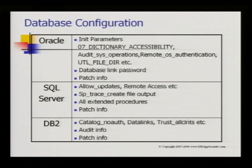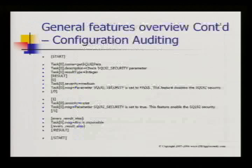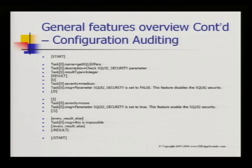Database configuration — init parameters — many parameters are auditing-related, and differ for each database context and policy. An important feature of Matrix is that it's extremely extensible: if a new vulnerability is released, there's no need to change code — 99% of the time you just add a configuration file and it automatically adds to your pen test policies.